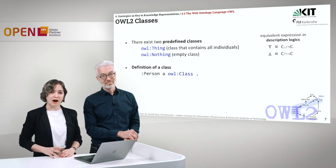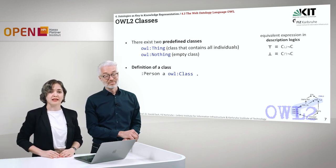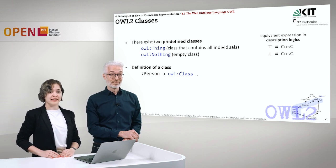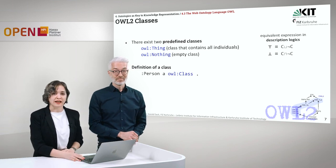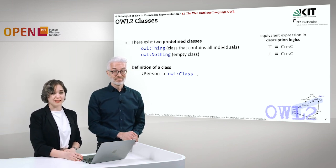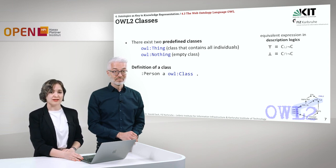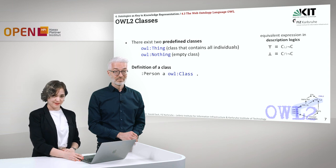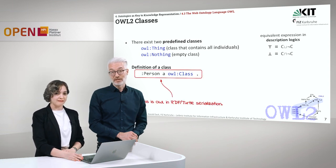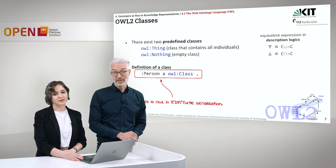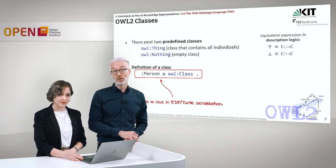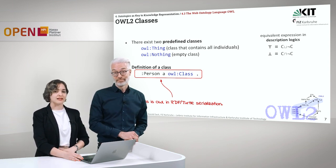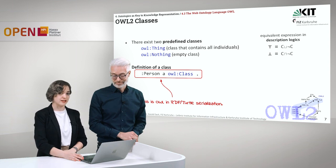A class in OWL is defined by naming it and giving it the type denotation 'a', which is equivalent to rdf:type. So we can define a class Person, which is of type owl:Class. It's basically the same as in RDF, but using owl:Class instead of rdf:Class. This is in RDF Turtle serialization.